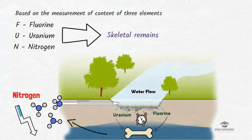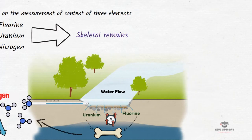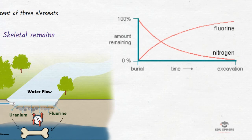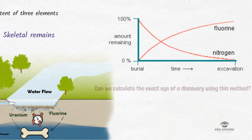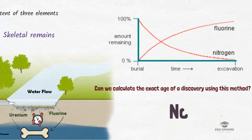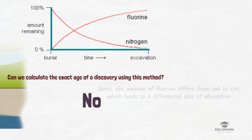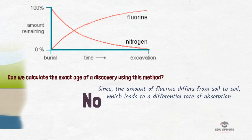Since these components contain nitrogen, there is a progressive loss of that element. As you can see in this graph, from burial to excavation the fluorine percentage increases while the nitrogen percentage decreases. By knowing the rate of decrease of nitrogen and the rate of increase of fluorine, one might expect to calculate the absolute age of a discovery; however, this is not possible because the amount of fluorine differs from soil to soil, giving a differential rate of absorption.